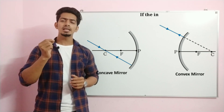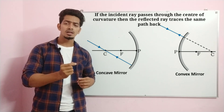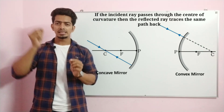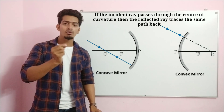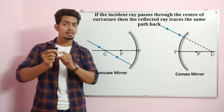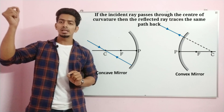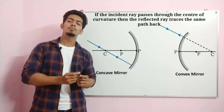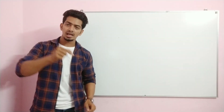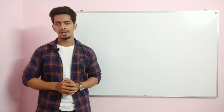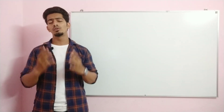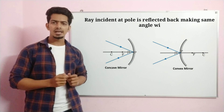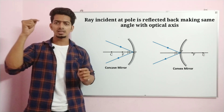Rule 3: if the incident ray passes through the center of curvature, then the reflected ray traces the same path back — meaning if the incident ray passes through the center of curvature, it reflects directly back along the same path.